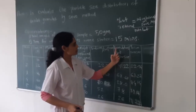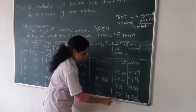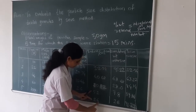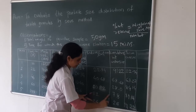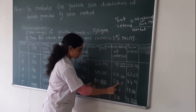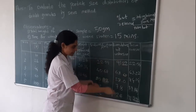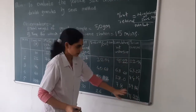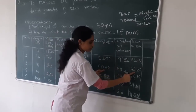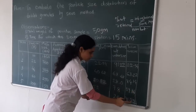For percent cumulative weight undersize, we start from the bottom — the last weight was 2.6, and we add each successive weight going upward: 2.6 plus 5.2, then 7.8 plus 20.92, then 28 plus 40.68 giving 68.68, then 68.68 plus 22. For percent cumulative weight oversize, we start from the top: 22.54 plus 40.68 gives 63.22, then add successive values downward to get each cumulative oversize figure.